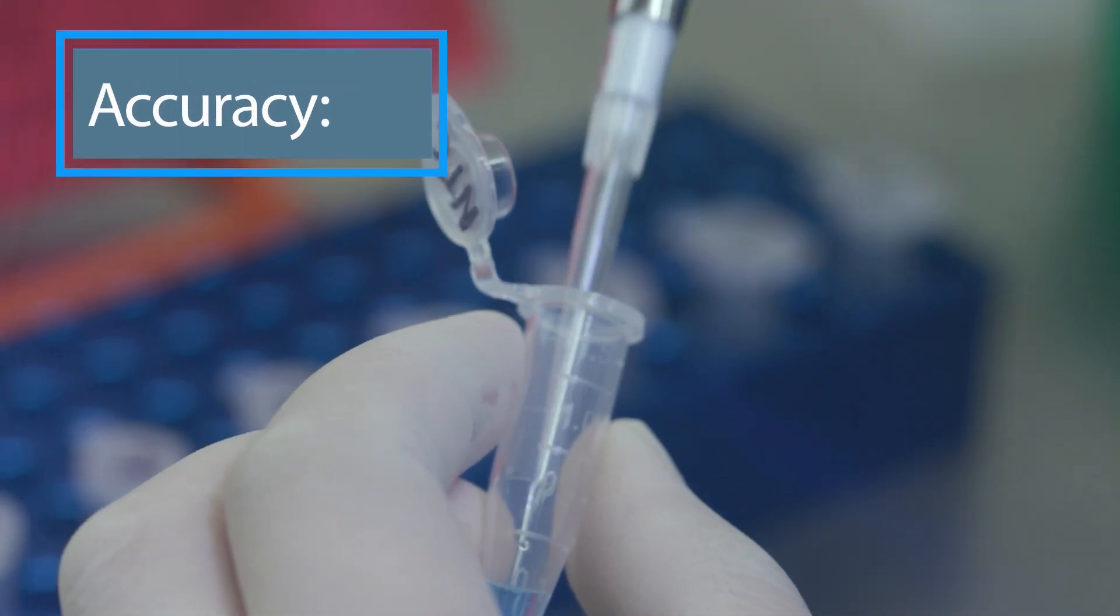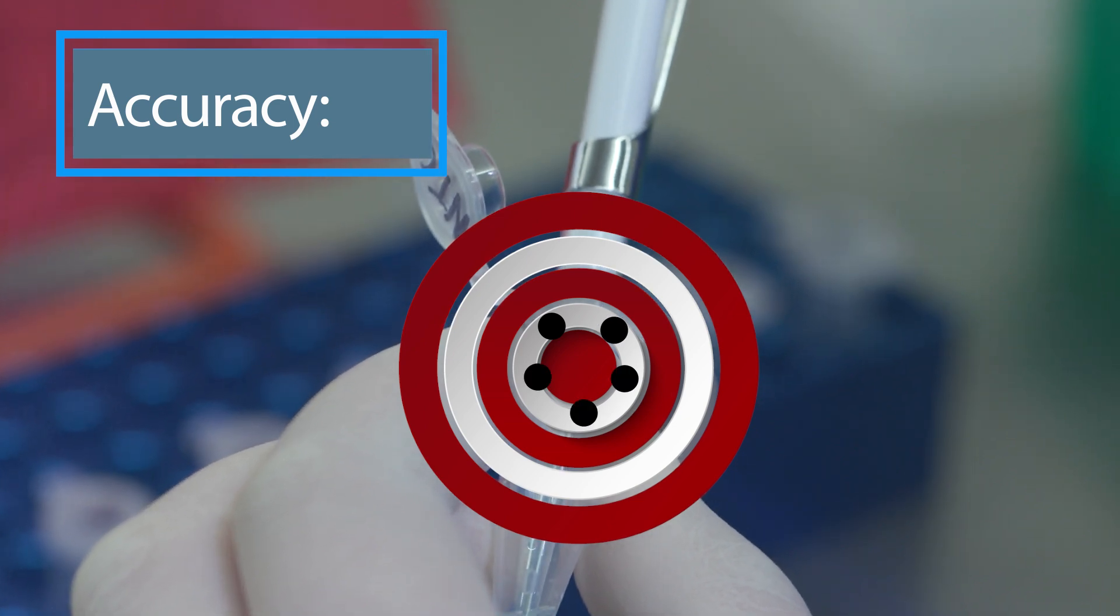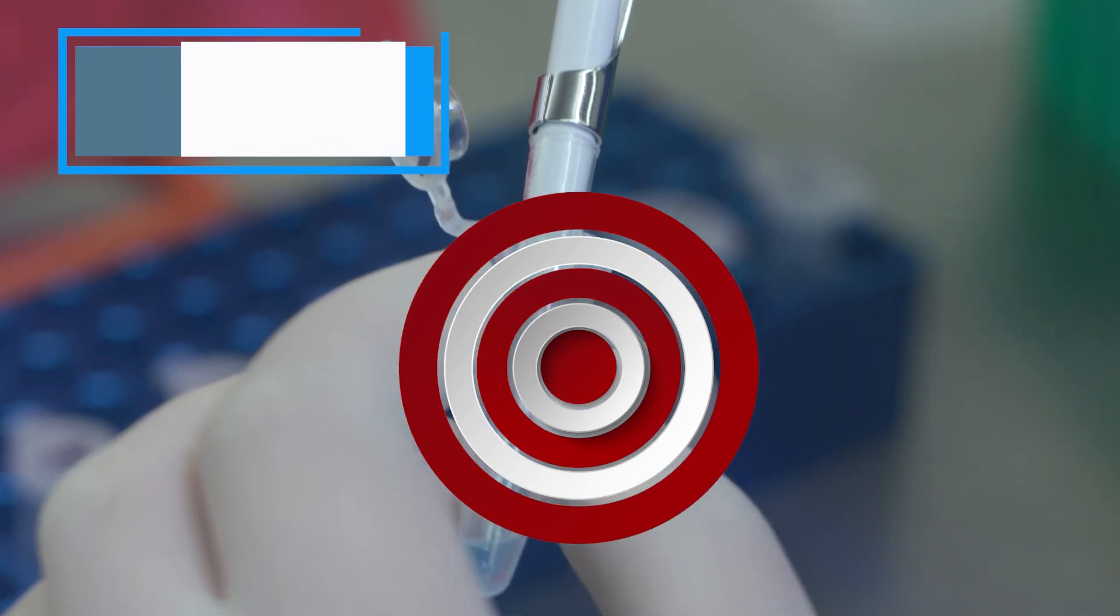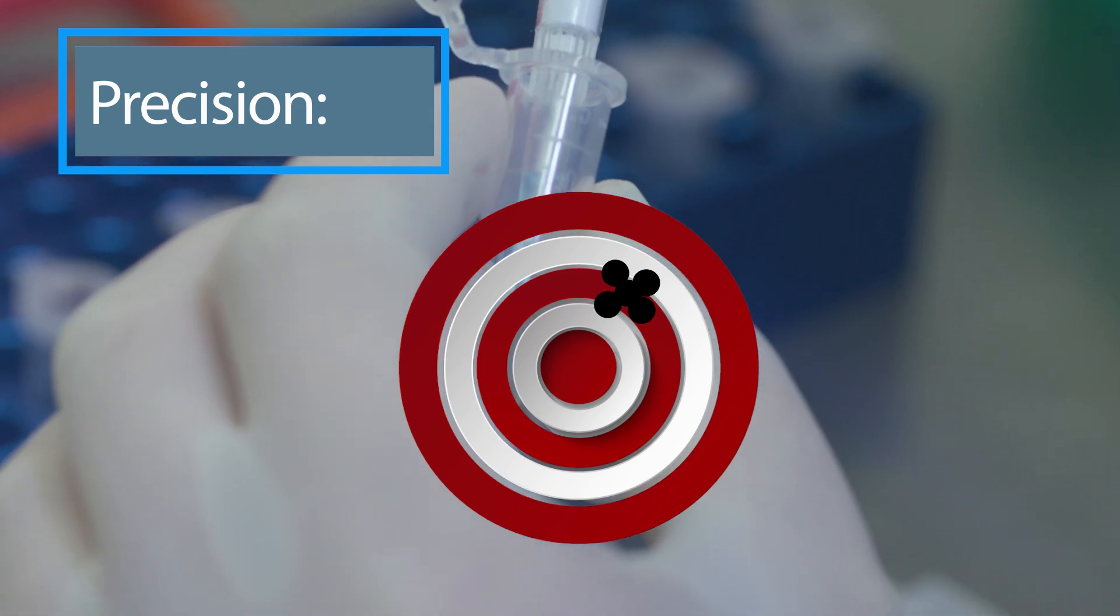Accuracy refers to how closely the transferred volume matches the set volume on the micropipet. Precision refers to the consistency of the volume dispensed across replicates.